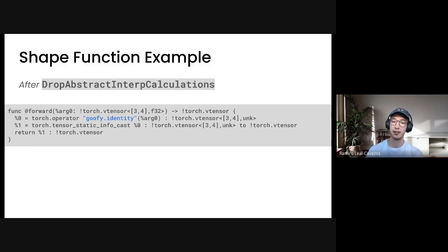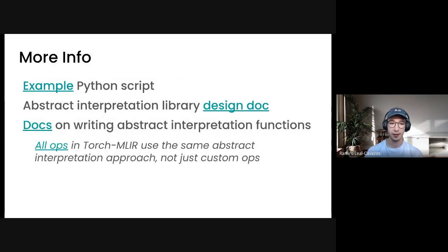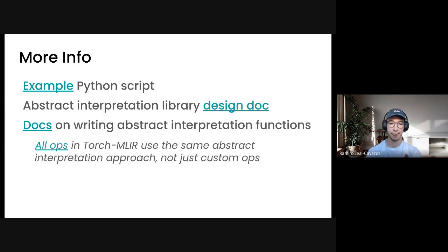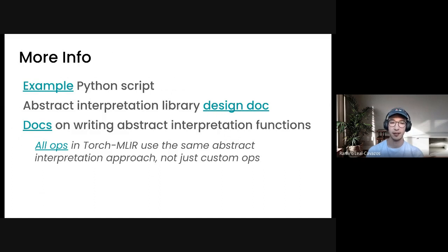Once you do the dtype pipeline, the unknown dtype will get converted to the right dtype for the function. You can find more information in the following links — there's an example Python script in TorchMLIR for how to register your op in PyTorch at the Python level, and also the design doc for the abstract interpretation library. Something important to point out: all ops in TorchMLIR actually use this abstract interpretation approach — it's not just for custom ops. Every normal Torch op has a shape and dtype function as well, so everything is being treated the same way. That's a high-level overview of the custom op support.